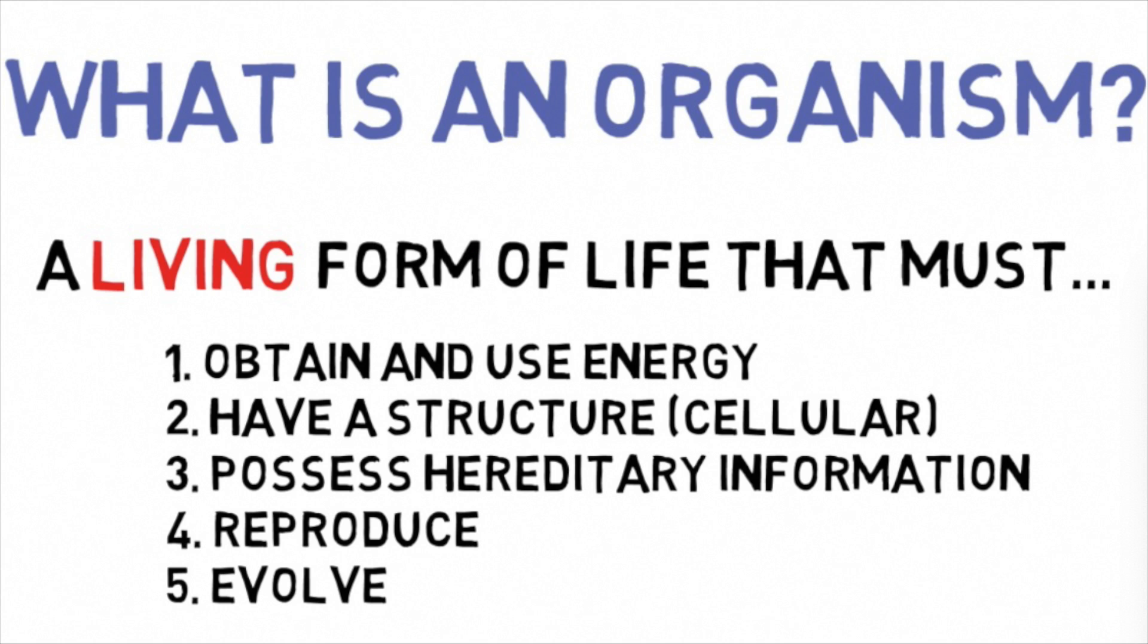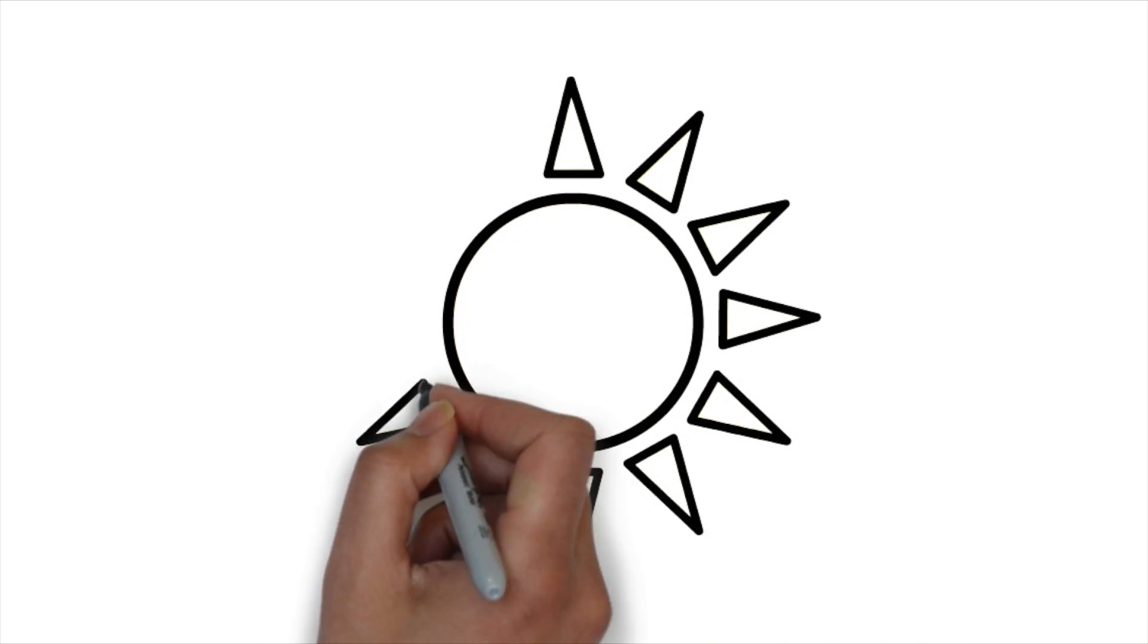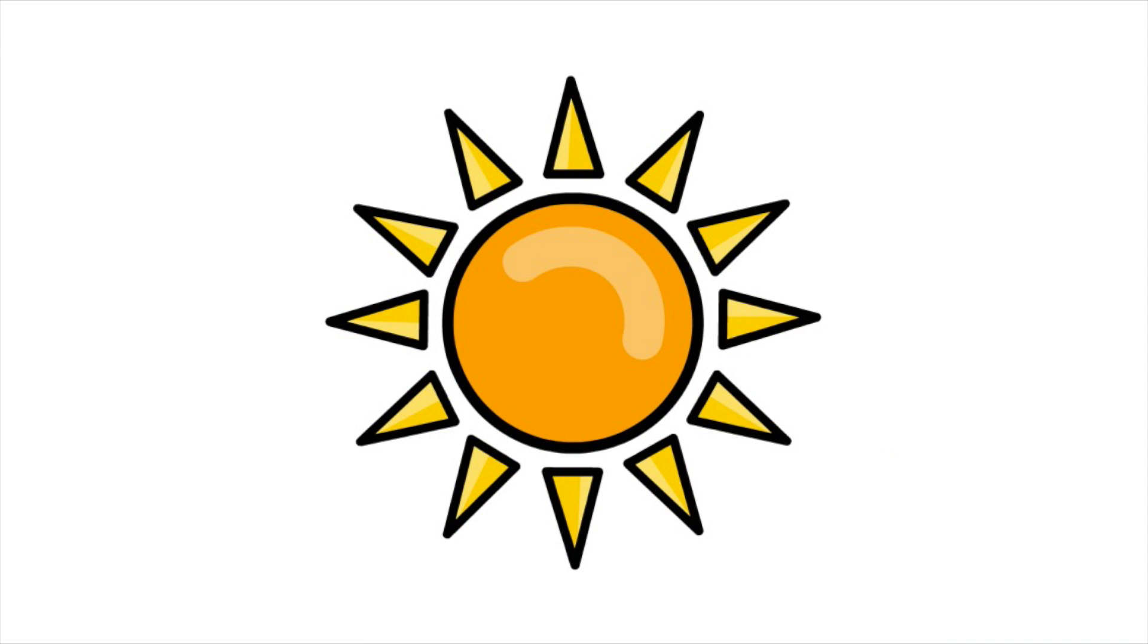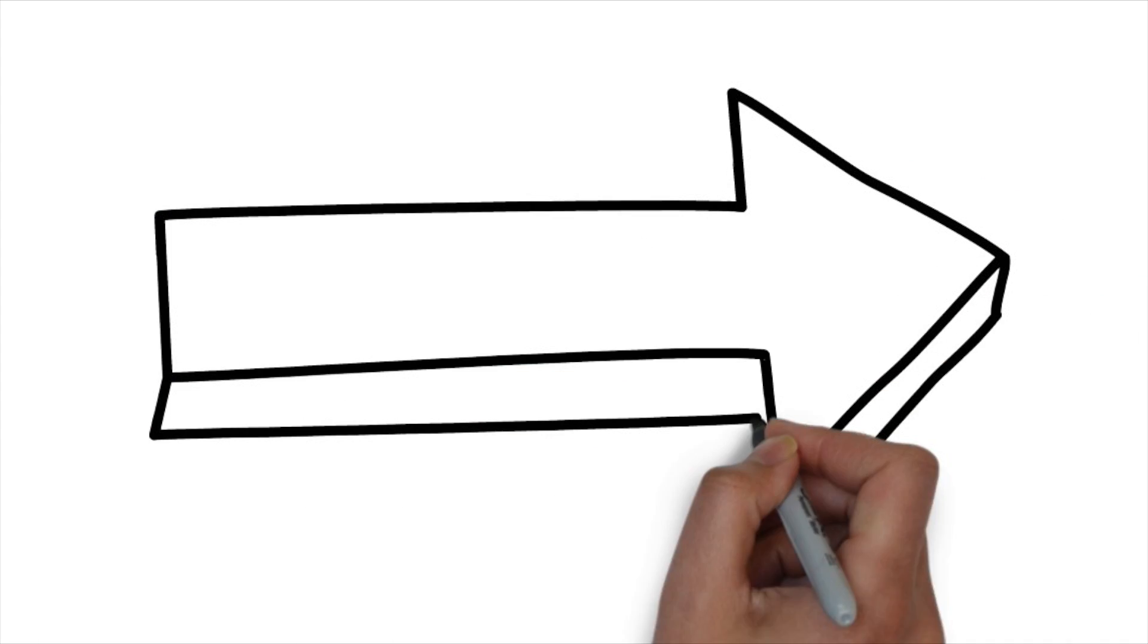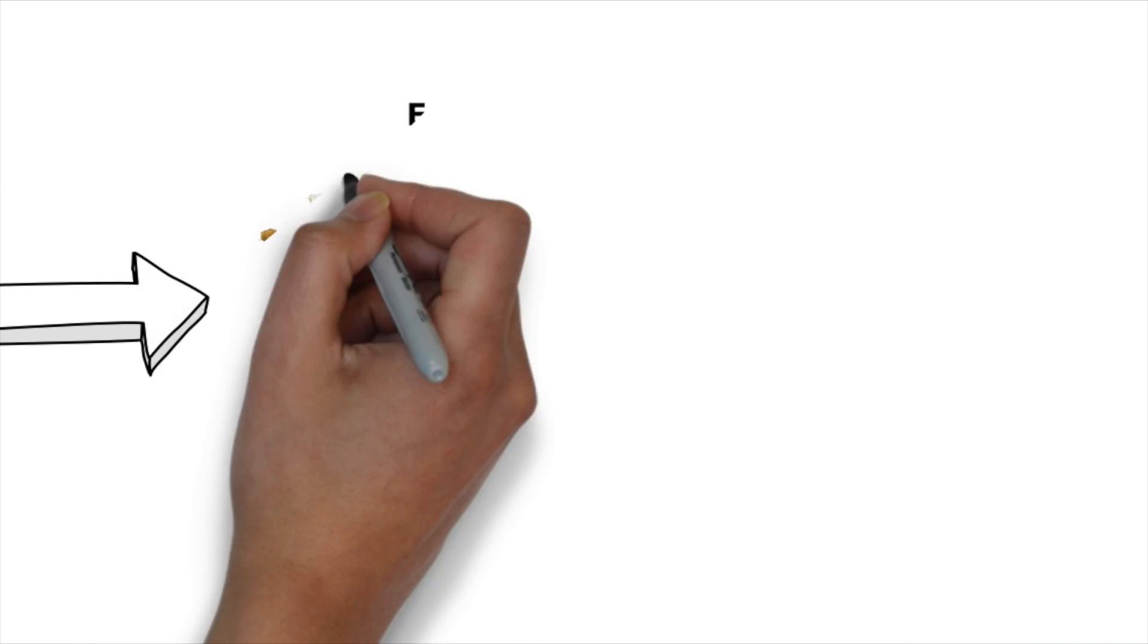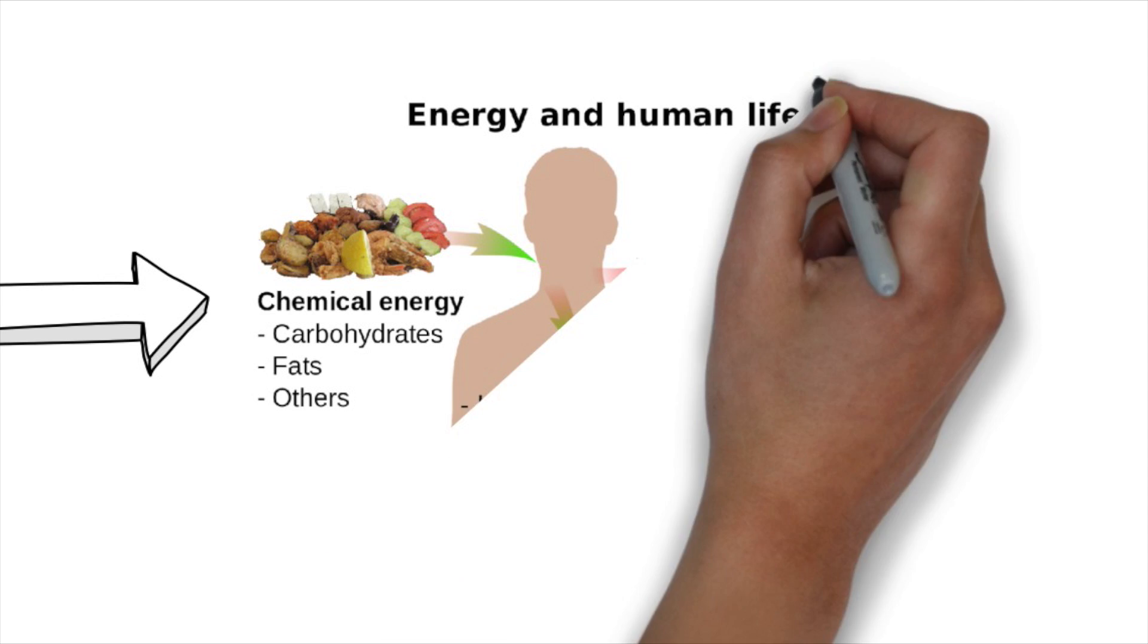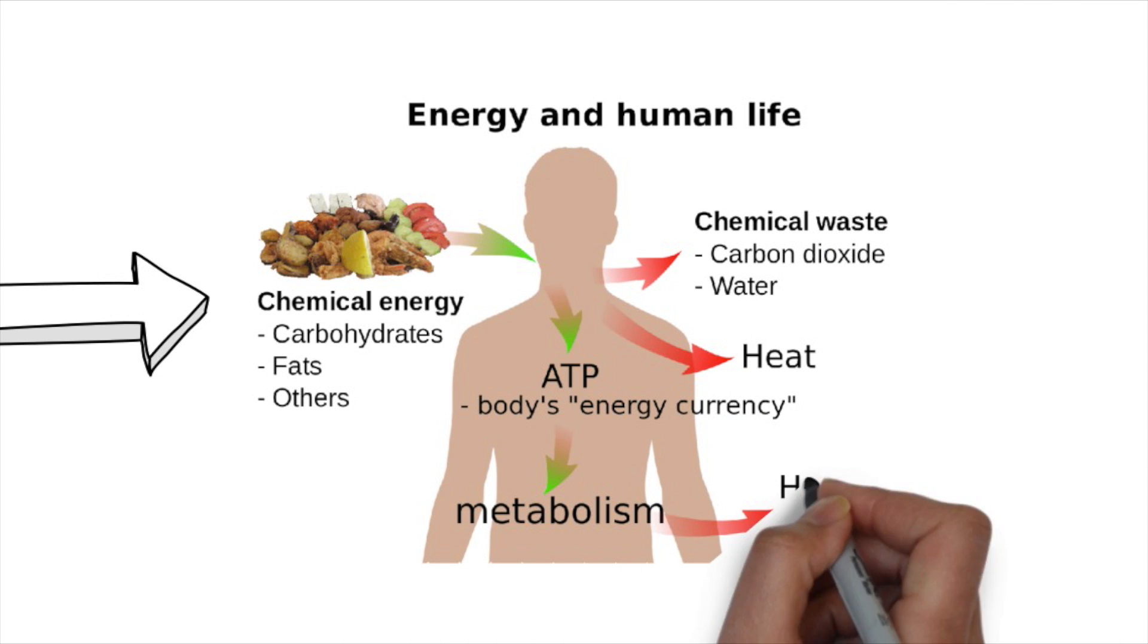The first characteristic of life is the ability to obtain and use energy. By the way, none of these are in a particular order, so you can rearrange them however you like. For biology terms, we define energy usually in the form of ATP, which is a molecule made up of adenosine and phosphate. This is like the energy currency for cells, allowing them to maintain their structure, stay alive, and maintain gradients.